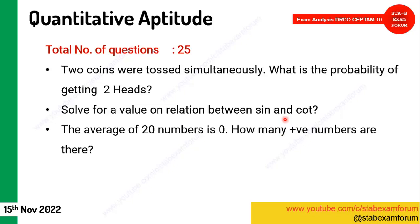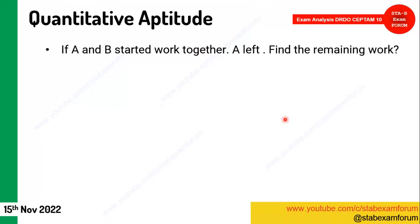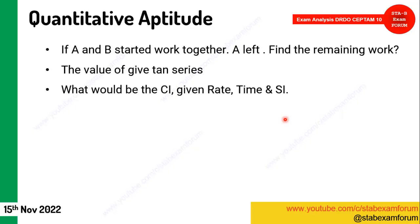A question on averages: the average of 20 numbers is zero — how many positive numbers are there? Very simple. Find the root of a given equation — straightforward. A work-and-time question: A and B start work together, A leaves — what is the remaining work? Simple. Then one question on tan series.